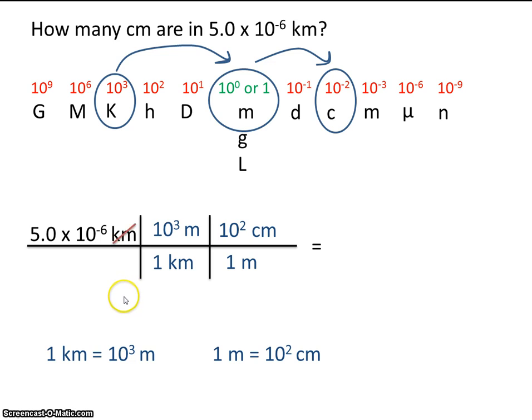So we have kilometers and kilometers. That should cancel. Are there any other units that appear in both the numerator and the denominator? There are. It's meters and meters. So those should cancel as well.